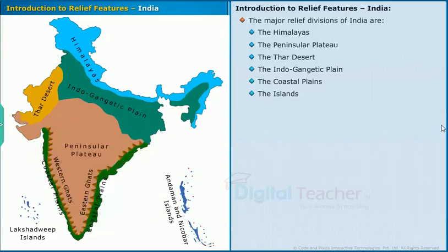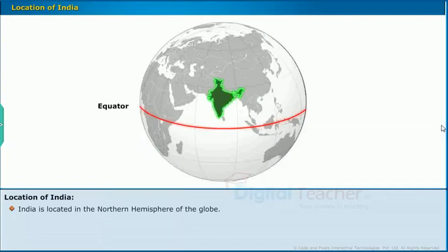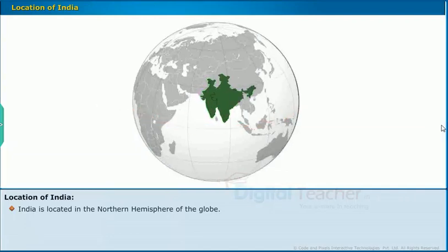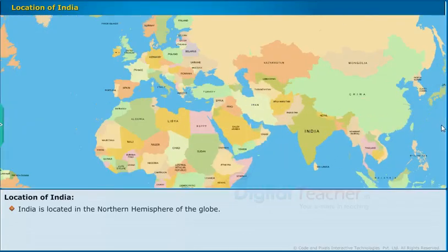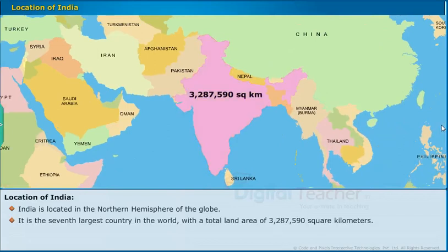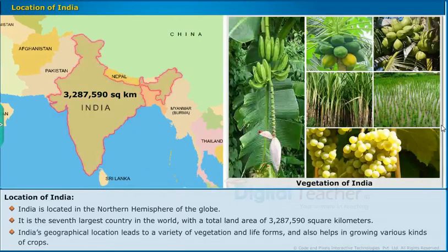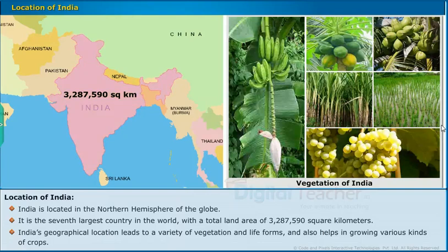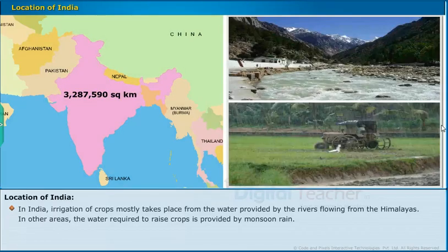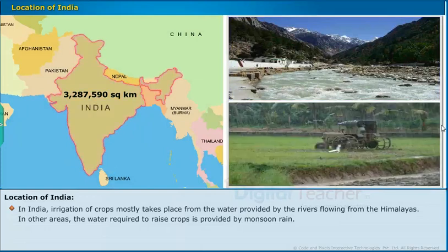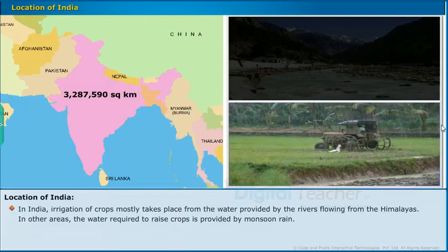Now let us study about the location of India on the globe. India is located in the northern hemisphere of the globe. It is the seventh-largest country in the world, with a total land area of 32,87,590 square kilometers. India's geographical location leads to a variety of vegetation and life forms and also helps in growing various kinds of crops. In India, irrigation of crops mostly takes place from the water provided by rivers flowing from the Himalayas. In other areas, the water required to raise crops is provided by monsoon rain.